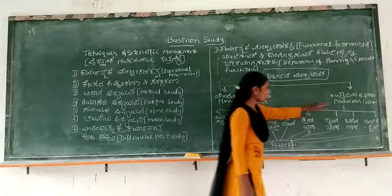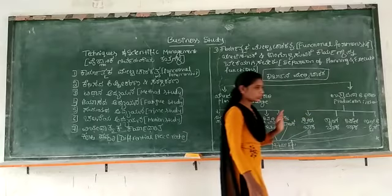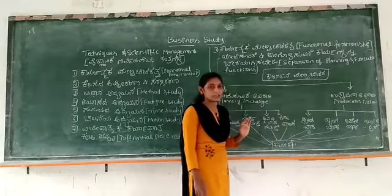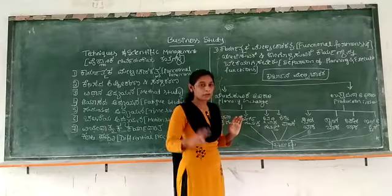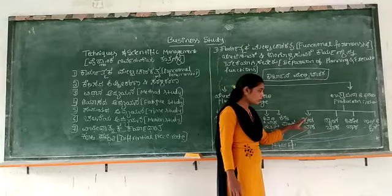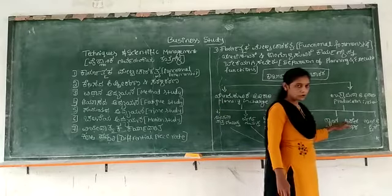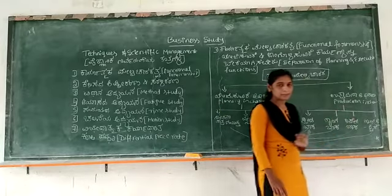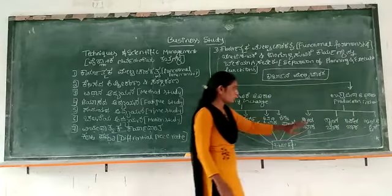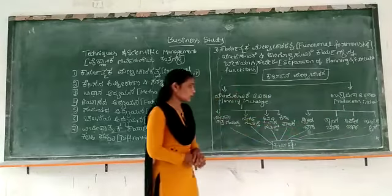Under the production in charge, there were four personnel. They are: one, speed boss; two, gang boss; three, repair boss; and four, inspector.